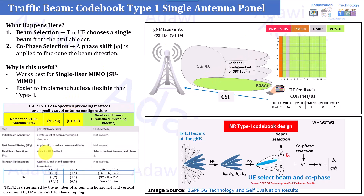The summary table at the bottom shows the steps in Code Book Type 1. After initial beam generation — for example from SSB — W1 and W2 are applied. During W2 the user selects Bi and alpha, which is then sent through the PMI report. The transmitter (gNB) applies Bi and alpha and sends the final transmission — the physical downlink shared channel.